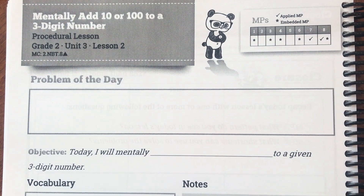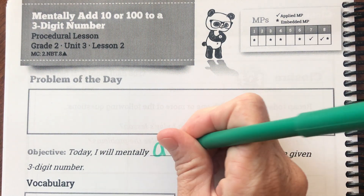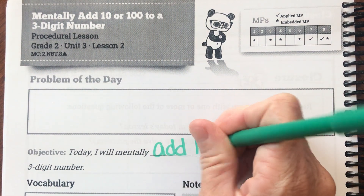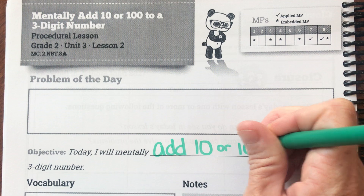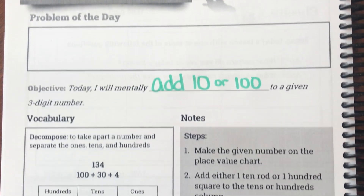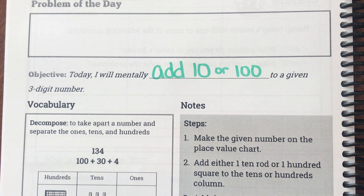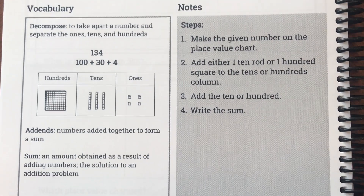Good morning ladies and gentlemen. Today we are on page 147 and our objective is: I will mentally add 10 or 100 to a given three-digit number. This is what we started yesterday, and we're going to continue it today. Let's quickly look at our vocabulary.